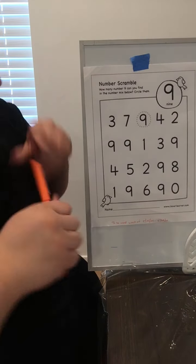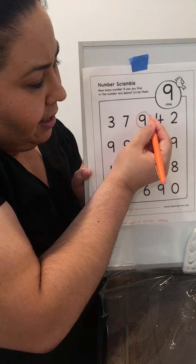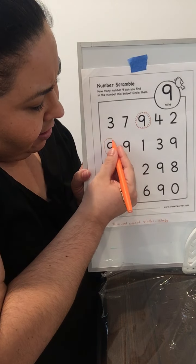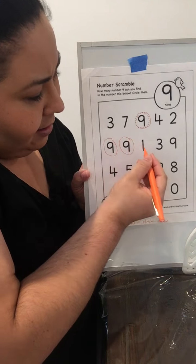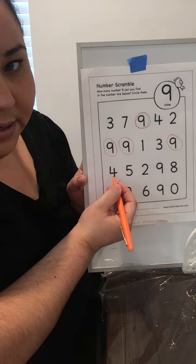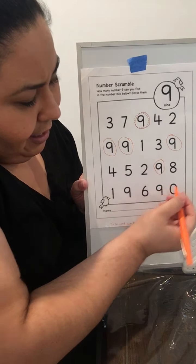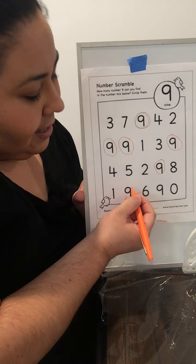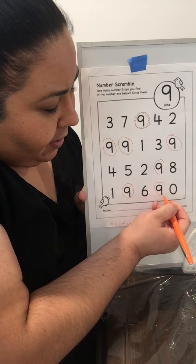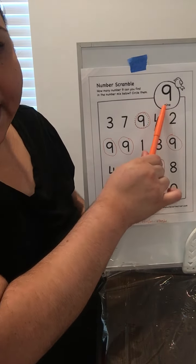Is this the number nine? No. This one? No. This one? Yes, number nine. Is this the number nine? No. How about this one? No. Yes, number nine. How about this one? Yes, number nine. This one? No. Yes, number nine. Yes. This one? No. No. No. Yes, number nine. No. No. Yes, number nine. How about this one? No. How about this one? Yes, number nine. And this one? No. Good job, we found the number nine. Awesome, guys.